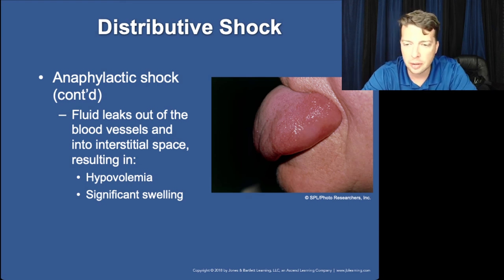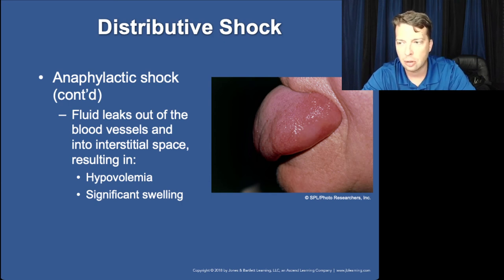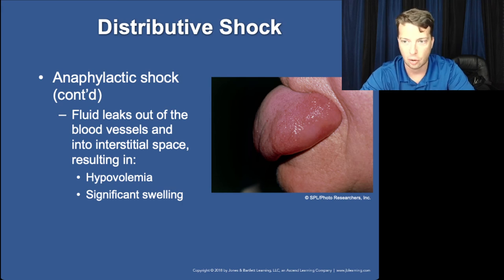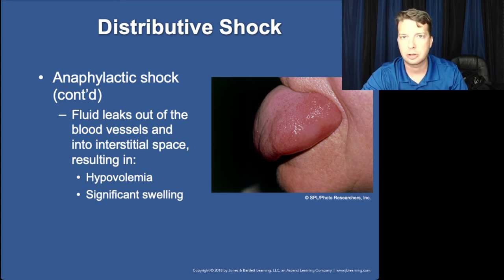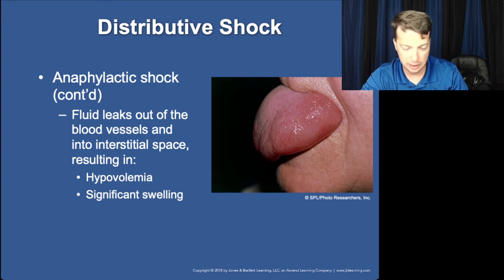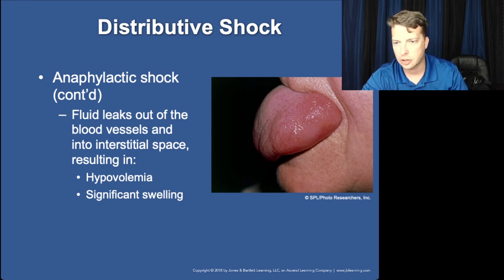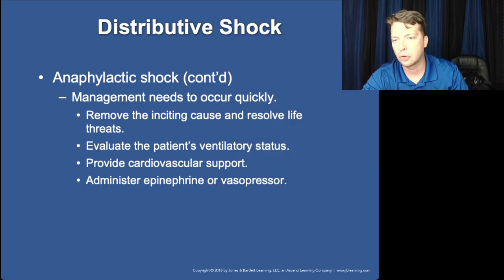Angioedema is a common feature of anaphylaxis — swelling of the tongue and mouth. The patient shown is not sticking their tongue out; it has swollen to the point it protrudes on its own. This represents third-spacing of fluid outside the vasculature. We treat anaphylactic shock with epinephrine IM — or IV at a different dose and concentration if needed — along with fluid resuscitation to replace the third-spaced fluid.